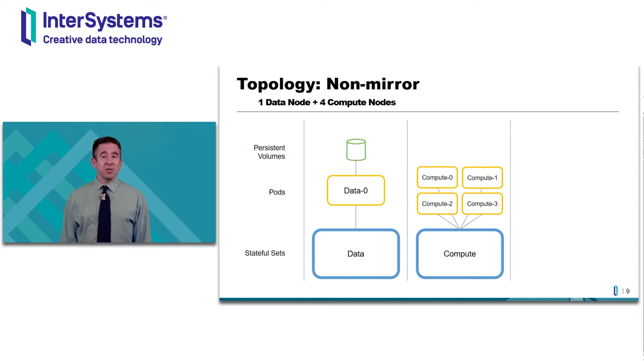There are actually four persistent volumes associated with the IRIS instance: data, widg, journal, and alternate journal. The compute nodes also have persistent volumes of their own, for example, to remember which data node they're bound to. And between the pod and persistent volume is a persistent volume claim.